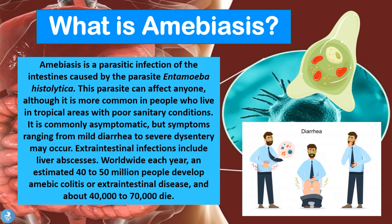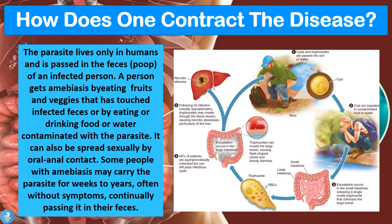Now let's take a closer look at how one can contract this disease. The parasite lives only in humans and is passed in the feces of the infected person. A person gets amoebiasis by eating fruits and vegetables that have touched infected feces, or by eating or drinking food or water contaminated with the parasite. It can also be spread sexually during oral-anal contact. Interestingly, some people with amoebiasis may carry the parasite for weeks to years, often without symptoms, but continuously passing it in their feces.